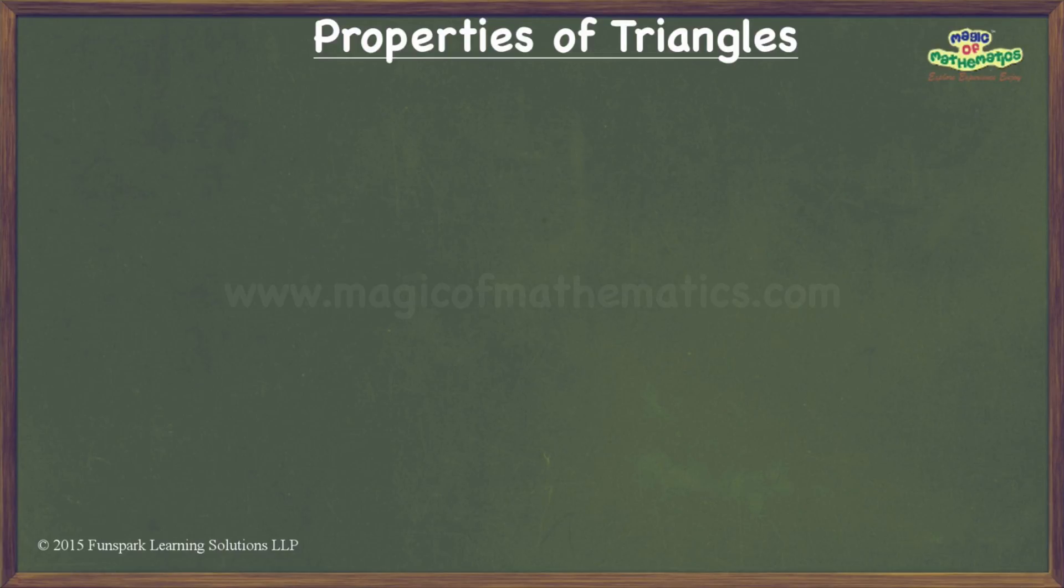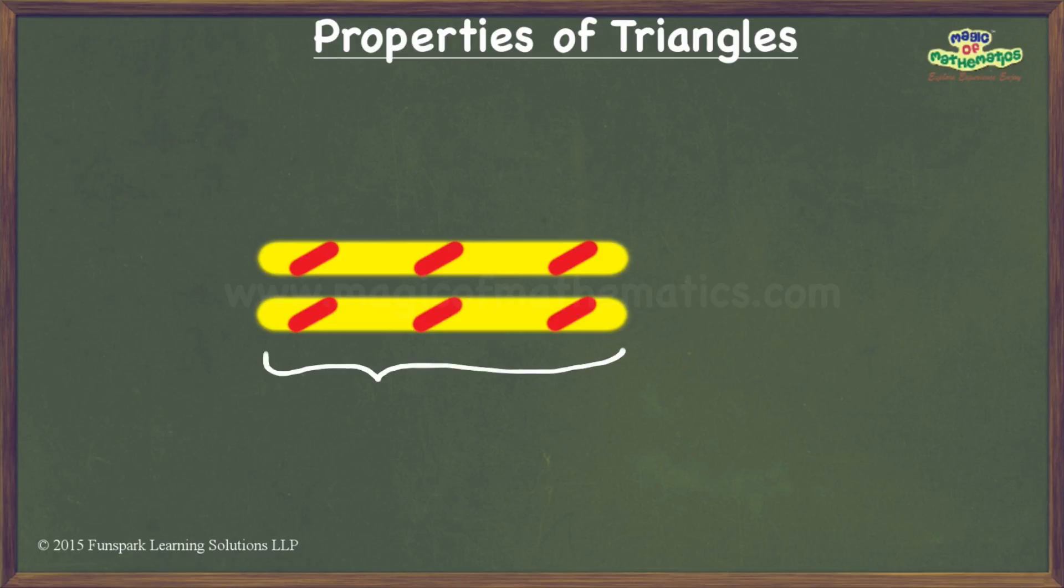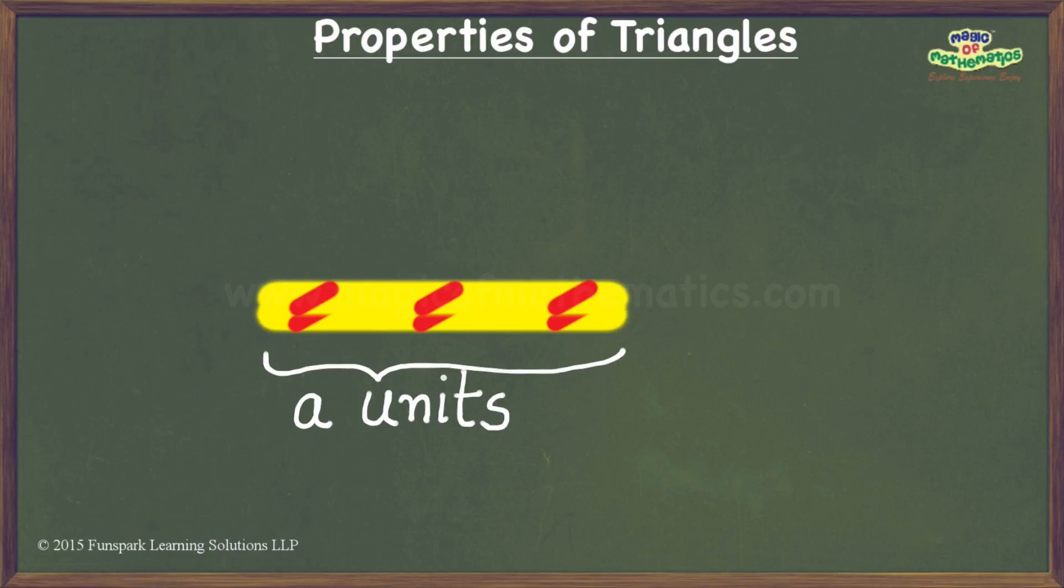Let us consider that I have two strips of the same length, namely A units laid out on a flat surface. Let us assume that this strip is an elastic strip. Let me put it on top of the other strip as shown. Once I do this, let me fix both ends of the two strips to the flat surface.